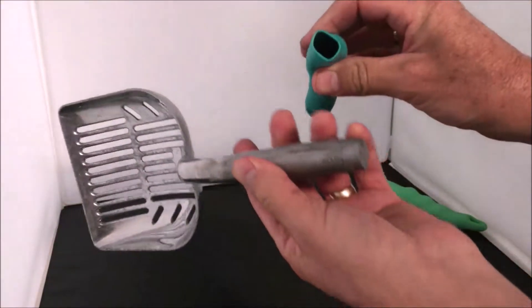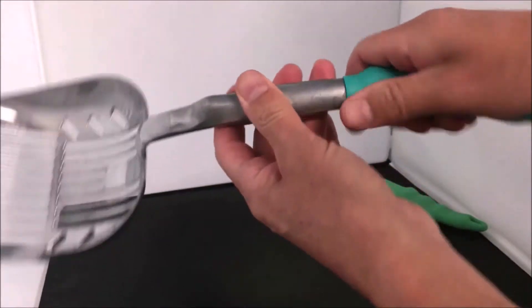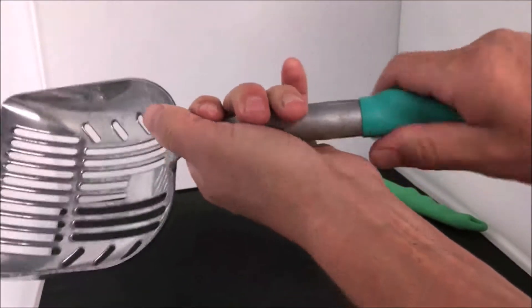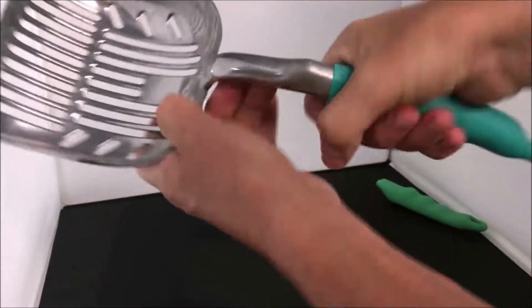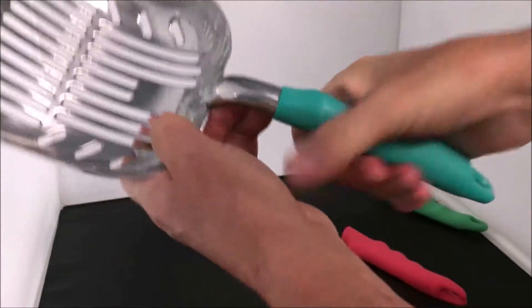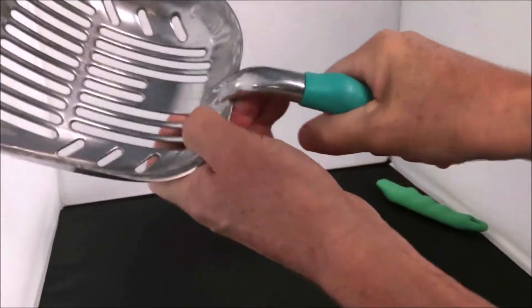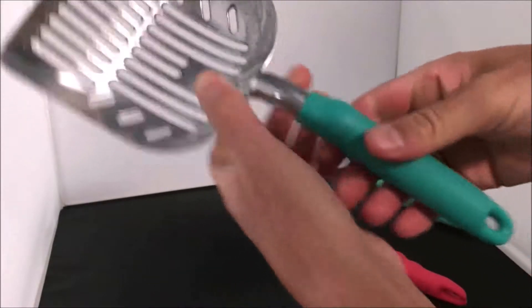Just take the grip, place it on the end of the handle like this. Just slide it on there. And then just kind of gradually push and twist a little bit. But just push that handle all the way on. And that's really all there is to it to put a new handle on your DuraScoop.